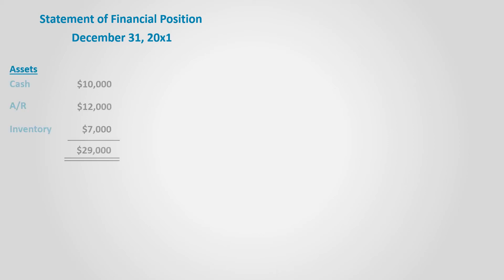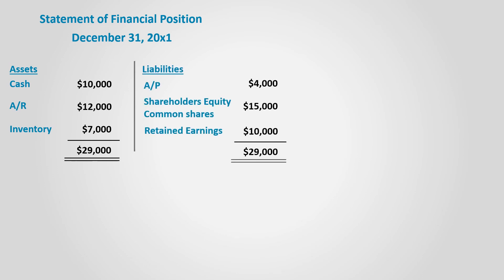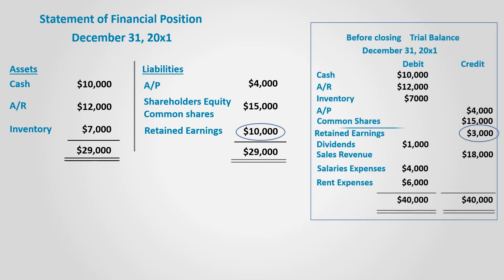Let's prepare the statement of financial position, which comprises assets, liabilities, and shareholders' equity. The balances of all these accounts are brought directly from the adjusted trial balance. The exception is the retained earnings account, which uses its updated balance from the statement of retained earnings — $10,000. The statement of financial position should now balance. The retained earnings balance on the statement of financial position differs from the adjusted trial balance because it is updated, while the trial balance figure is not.